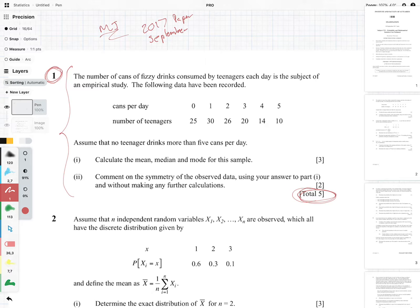The question says the number of cans of fizzy drinks consumed by teenagers each day is the subject of an empirical study. The following data has been recorded with cans per day and the number of teenagers that drink that number of cans. Assume that no teenager drinks more than five cans per day. In part one of the question, calculate the mean, the median, and the mode for the sample. This should be the three easiest marks that you will ever get in a stats paper.